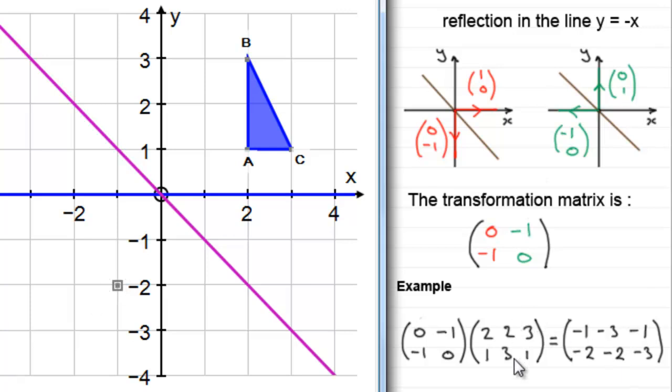B was at 2, 3, it's now moved to minus 3, minus 2, which is that point there. And finally for C, which was at 3, 1, it's now minus 1, minus 3, which is that point there.